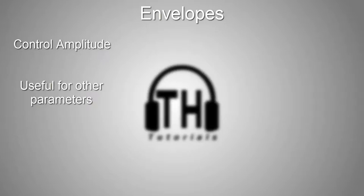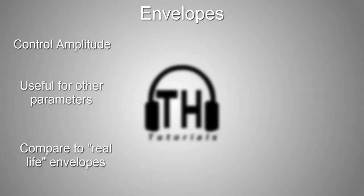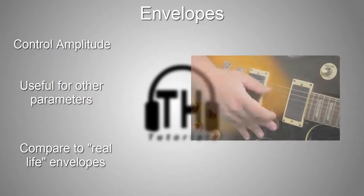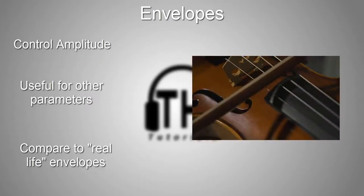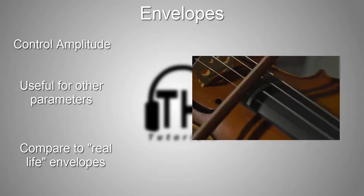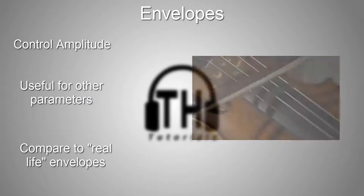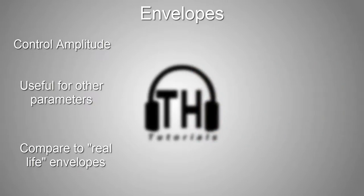When building envelopes, it might be useful to think about the envelopes of real sounds. For example, a plucked string has a very fast attack, whereas a bowed string has a very slow attack. So if we apply this to synths, a pad might sound better with a long attack that slowly builds into the chord, like a violin might when it's bowed. And if we're creating a lead melodic passage, then having a quick attack with a short decay might be more appropriate.